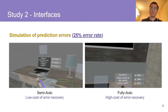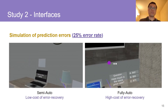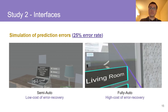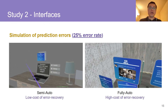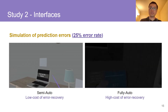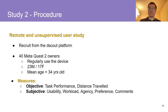To learn more about users' perceptions toward prediction errors, we simulated imperfect prediction accuracy. In both Semi-Auto and Fully-Auto, the system would suggest the wrong application 25% of the time. However, since users had no control in the Fully-Auto condition, a higher cost was induced to recover from the error. We conducted a fully remote and unsupervised user study using the DSCAL platform with 40 regular Meta Quest 2 users, collecting both objective and subjective measures for evaluation.